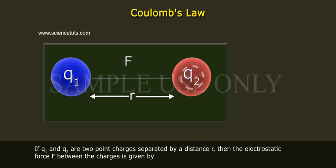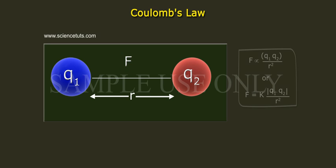If Q1 and Q2 are two point charges separated by a distance r, the electrostatic force F between the charges is given by F is directly proportional to Q1 Q2 by r square, or F is equal to K of modulus of Q1 Q2 by r square.